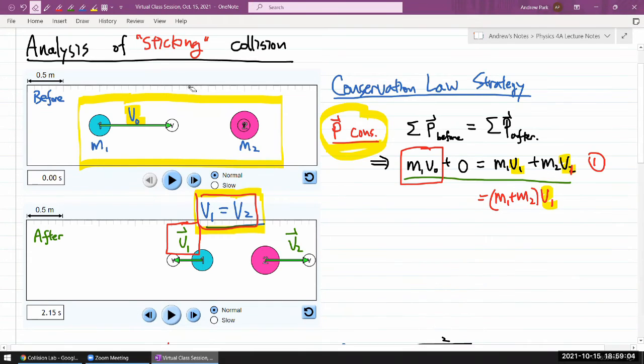So my solution for V1 is, let's solve V1 equals M1 divided by M1 plus M2 times V0. That's it. That's my answer. I'm done.